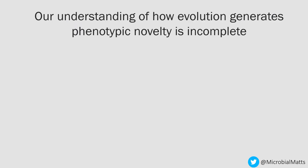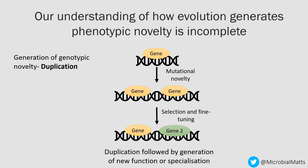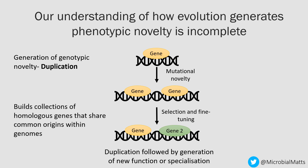A key outstanding question for evolutionary biology is understanding how phenotypic novelty is generated. There's been a lot of focus on the generation of genotypic novelty, particularly through gene duplication. This is where a second copy of a gene is generated by a mutation, and then selection and fine-tuning creates a new function for one of those copies, building collections of homologous genes within genomes which share common ancestors as well as a common three-dimensional structure.